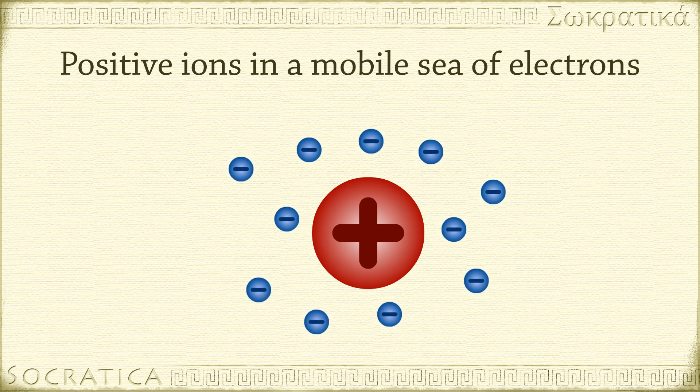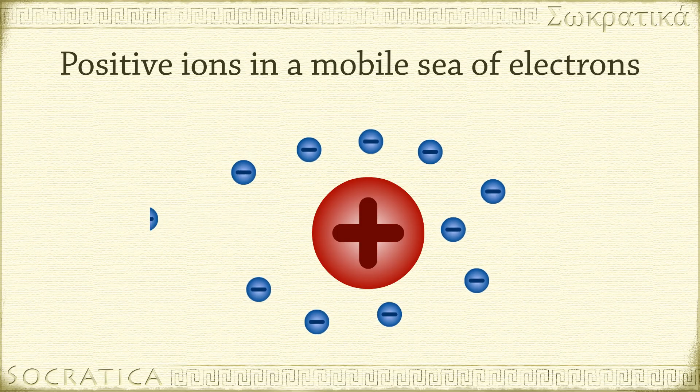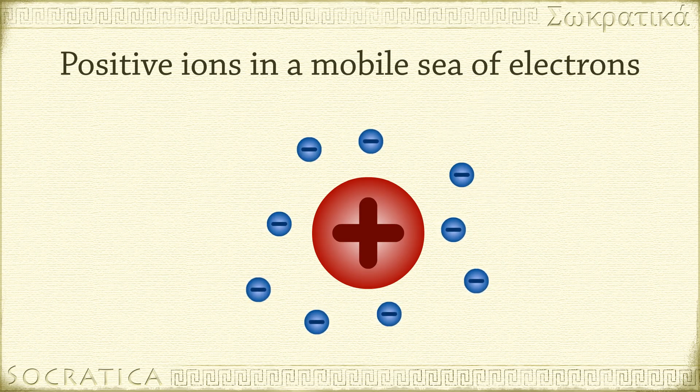When one electron flows away, another one moves in to take its place, due to the electrostatic attraction between the cations and the electrons. This is the nature of metallic bonding, what holds a metal together.